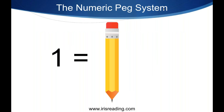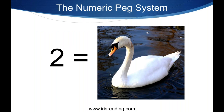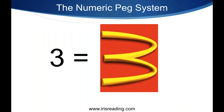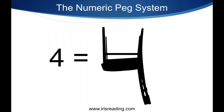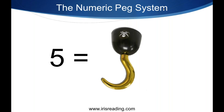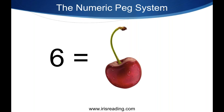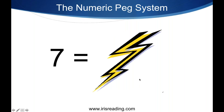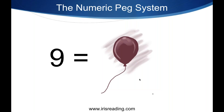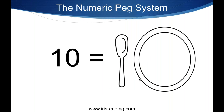With the numeric peg system, every number becomes a visual. The number one becomes a pencil. The number two is a swan. The number three is McDonald's — basically you assign a visual for every number. Four is a chair, upside down but a chair. Five is a hook. The six kind of looks like a cherry — it's not exact but it's a visual approximation. Seven is a lightning bolt. Eight is a racetrack. Nine is a balloon. Ten is maybe a place setting, a bowl and a spoon on the side. These numbers can represent different visuals — you don't have to use these if you prefer something else.